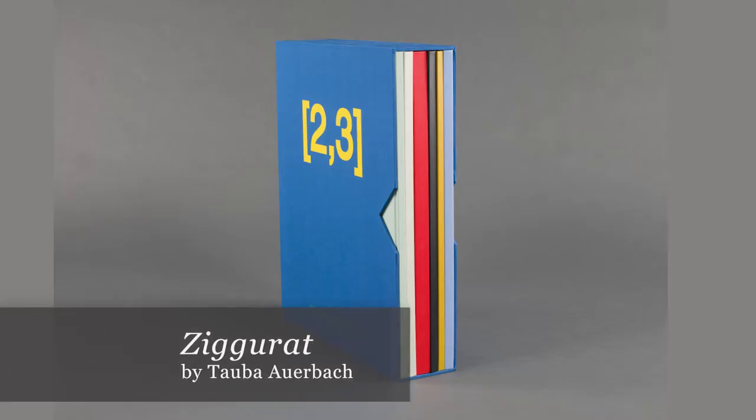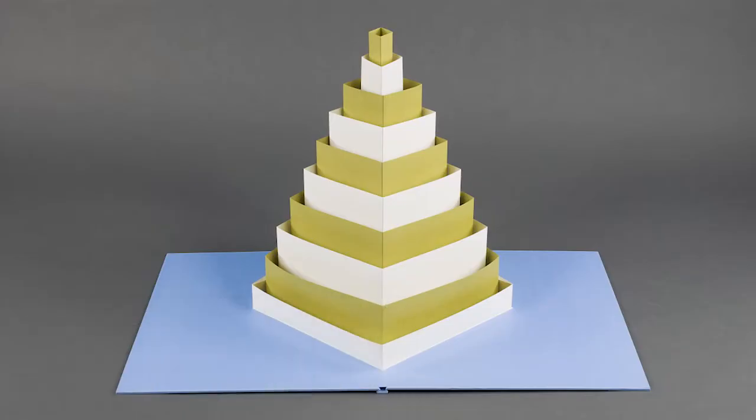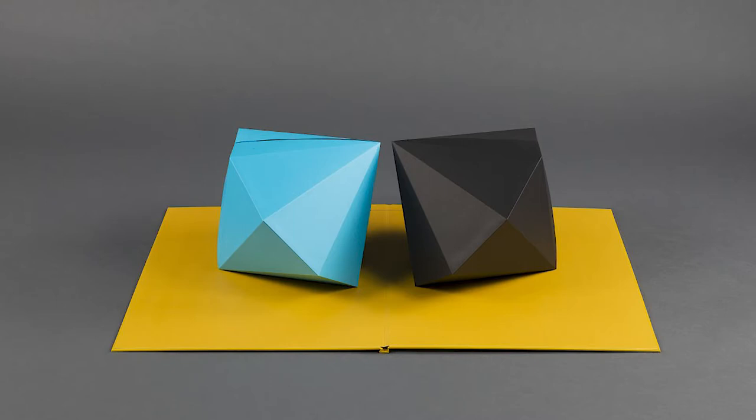Here is another book titled Ziggurat. This type of book is called a pop-up book. It looks like a book when it is closed, but when you open it, there are paper shapes that pop like sculpture. What shapes do you recognize as you look at images from this book?